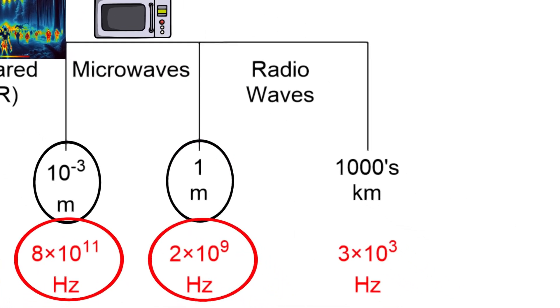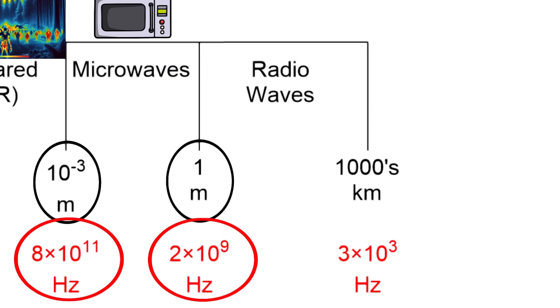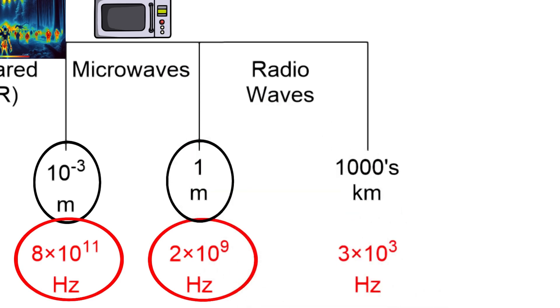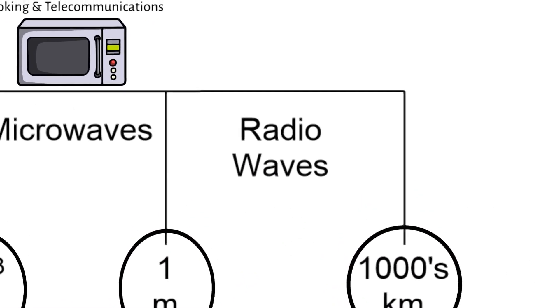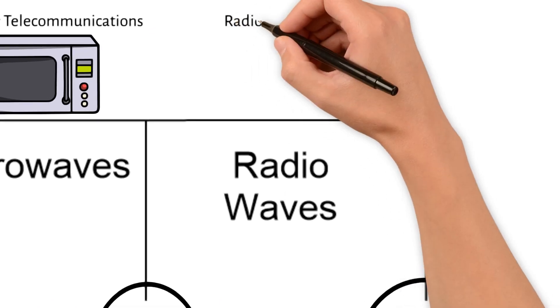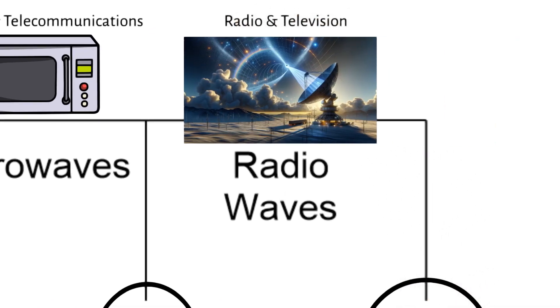The last is radio waves. With the longest wavelengths in the EM spectrum, they range from 1 meter to thousands of kilometers, with frequencies of 3,000 Hertz up to 2 times 10 to the 9th Hertz. Radio waves are used for broadcasting radio signals, television signals, as well as for communication with satellites and in radar systems.